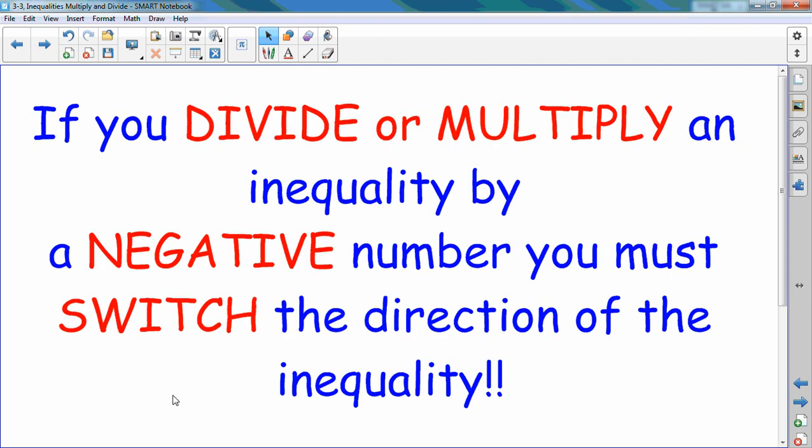The most important thing when solving inequalities using multiplication and division is that when you multiply or divide by a negative sign, you need to make sure and flip the direction of the sign. When you divide or multiply an inequality by a negative number, you must switch the direction of the inequality. And we're going to talk about that here in a second.